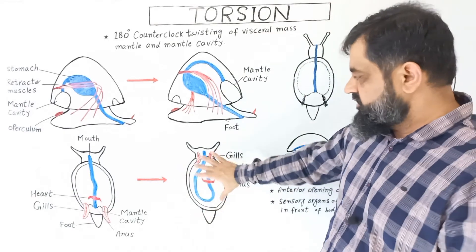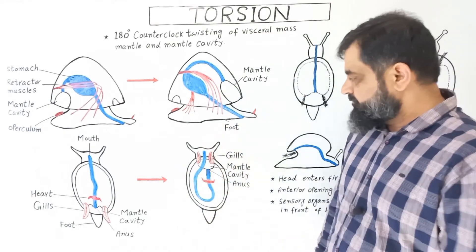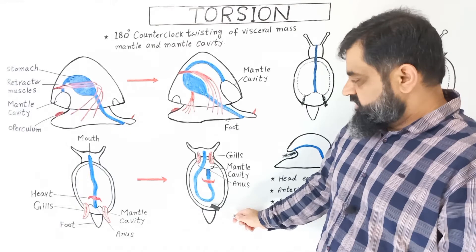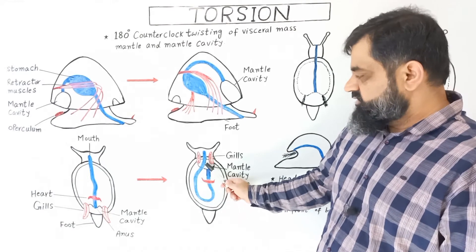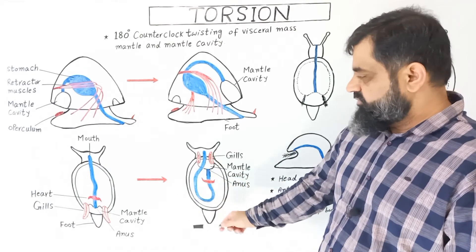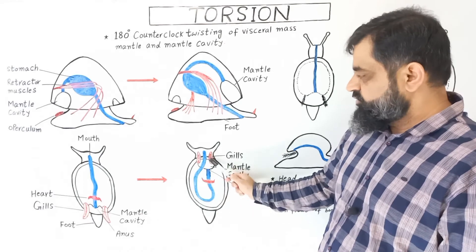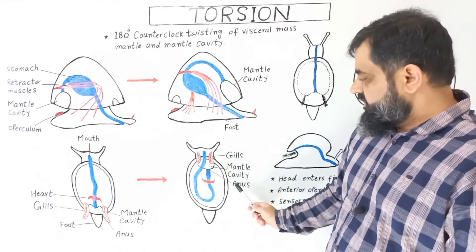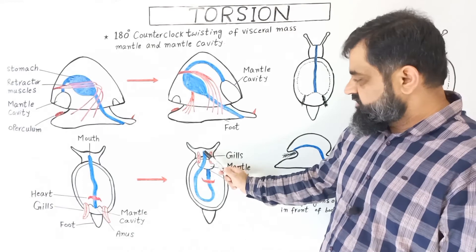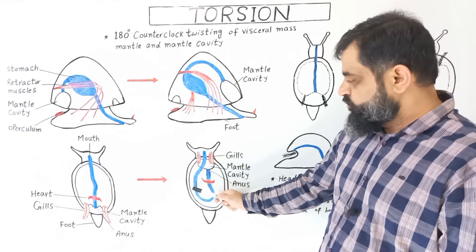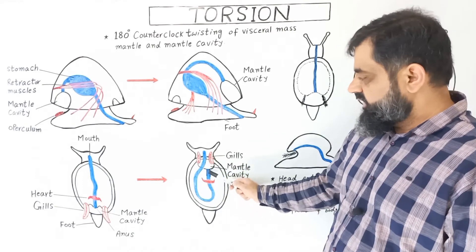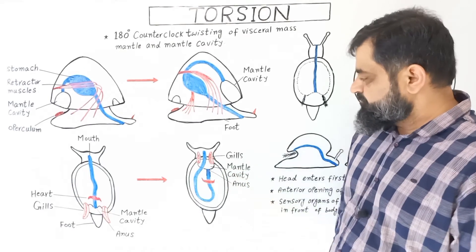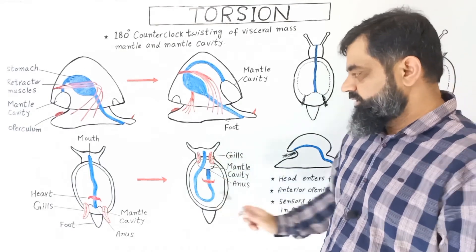After torsion, as you can see in this diagram, the mantle cavity which was on the posterior surface has now moved toward the anterior surface. At the same time, the gills are also transferred to the anterior surface — right and left gills — and the digestive system has twisted into a U-shaped structure, with the anus opening into the mantle cavity on the anterior surface. Torsion has been completed.